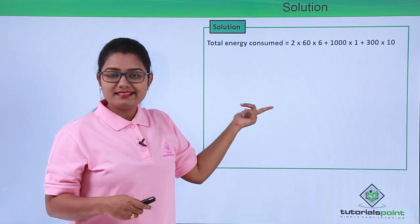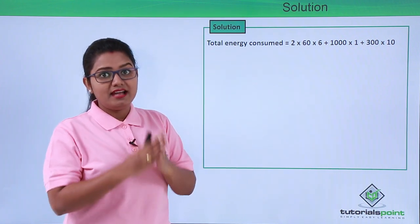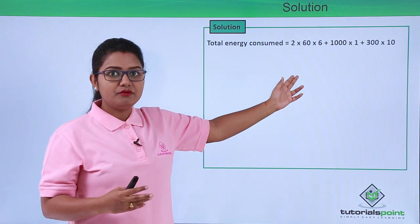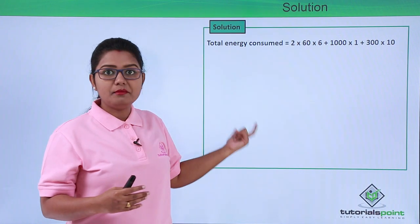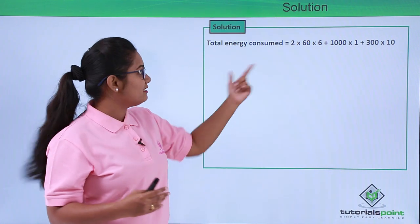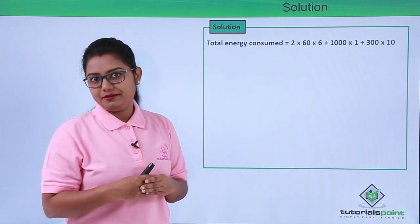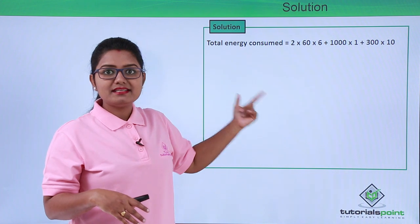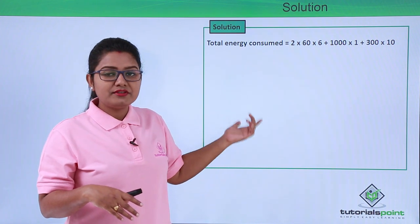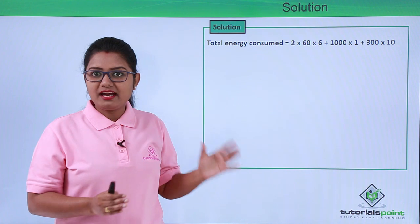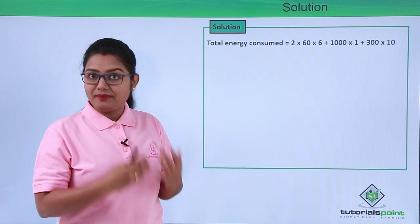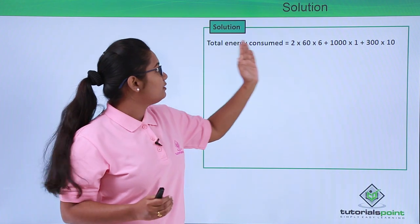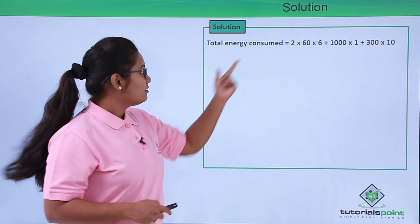The second term is 1000 × 1, where 1000 watts is the power of the electric iron and it was used for one hour. The third term is 300 × 10, representing the energy consumed by the refrigerator, since its power is 300 watts and it was used for 10 hours.